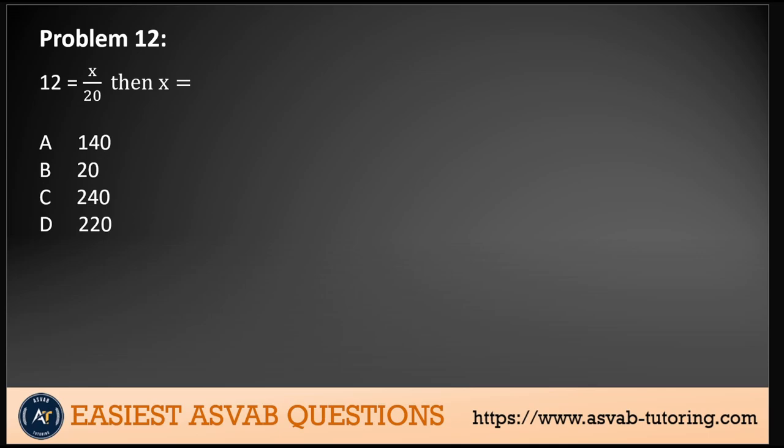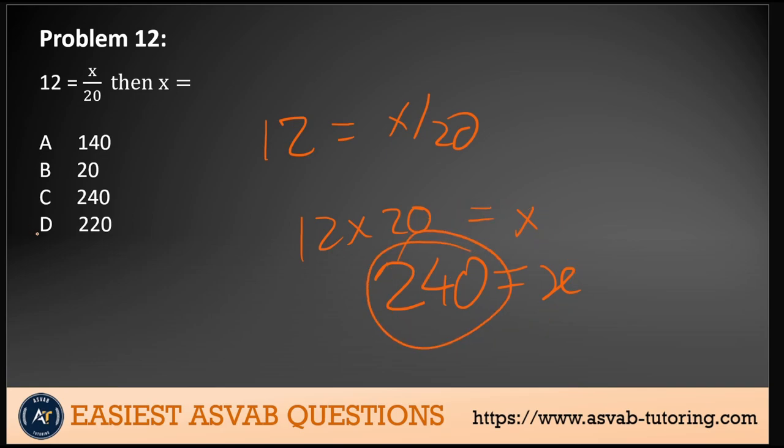Problem 12: We have 12 equals X over 20. So X would equal what? If we have 12 equals X over 20, then we need to multiply both sides by 20. So 12 times 20 equals X, which means 240 equals X. There we go, that's our answer, option C.